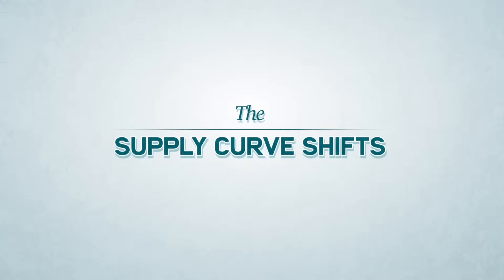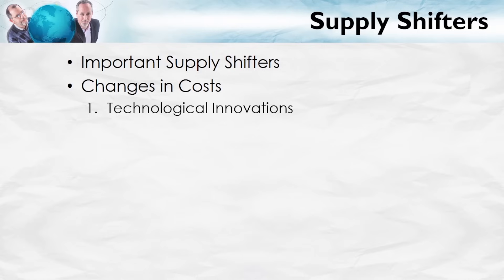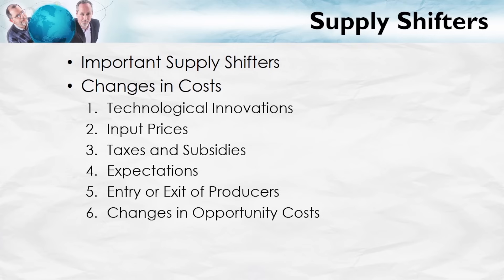Now that you've got the basics of the supply curve down, we'll jump into factors which shift the supply curve. Here's the same list of important supply shifters. The most basic one is a change in costs. How does technological innovation change costs? How do input prices change costs? Taxes and subsidies, expectations, entry or exit of producers. The goal is not to memorize the list — the goal is to understand. Let's do some examples.